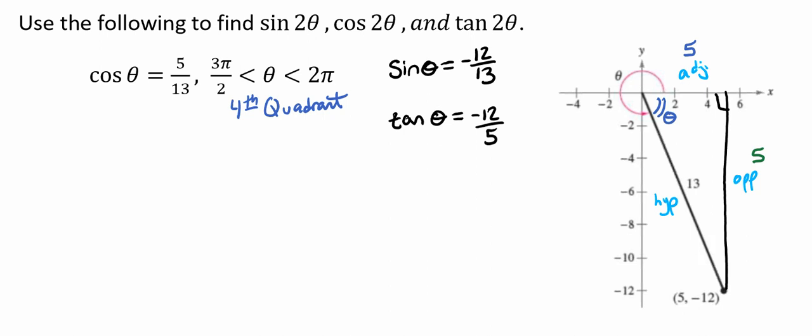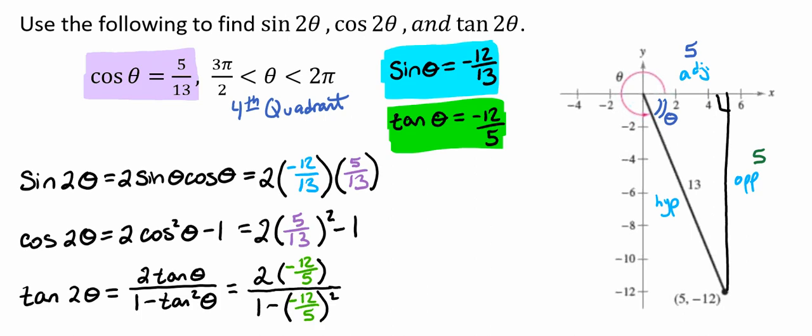Using each of the double angle formulas for sine, cosine, and tangent, we can write the following. Notice that we were able to plug in our sine of theta values for the sine of thetas, our cosine of theta values for the cosine of theta, and our tangent of theta for our tangent of theta values.